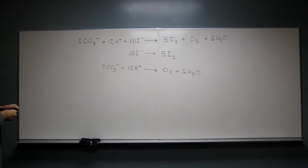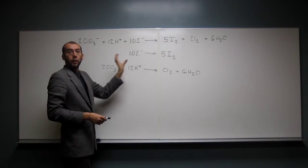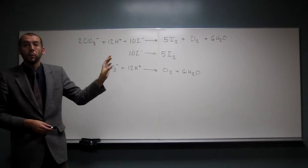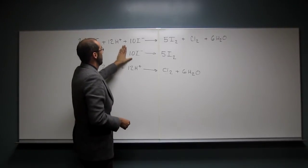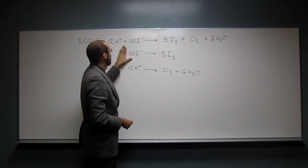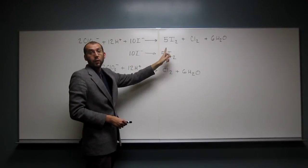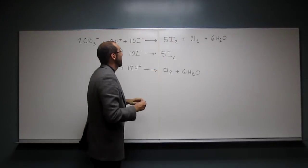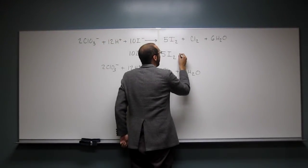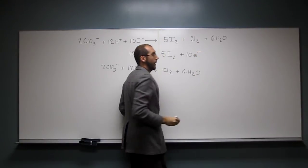So remember, when we're doing this, after we balance all of our atoms, we want to balance our charges. So on this side of the equation, we've got 10 negative signs, right? And on this side, we have 0 negative signs. So to balance it, to get a minus 10 on both sides, we're going to have to add 10 electrons to that side.